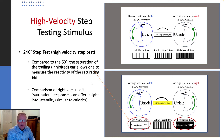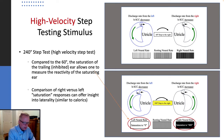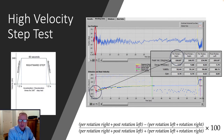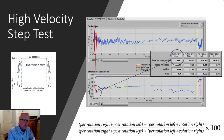However, in the high velocity step test, the acceleration occurs over a much longer period. The step profile is now not 0.3 seconds, but rather four times that — at 1.2 seconds. So the cupula are enduring an acceleration stimulus over four times longer than the other stimulus.